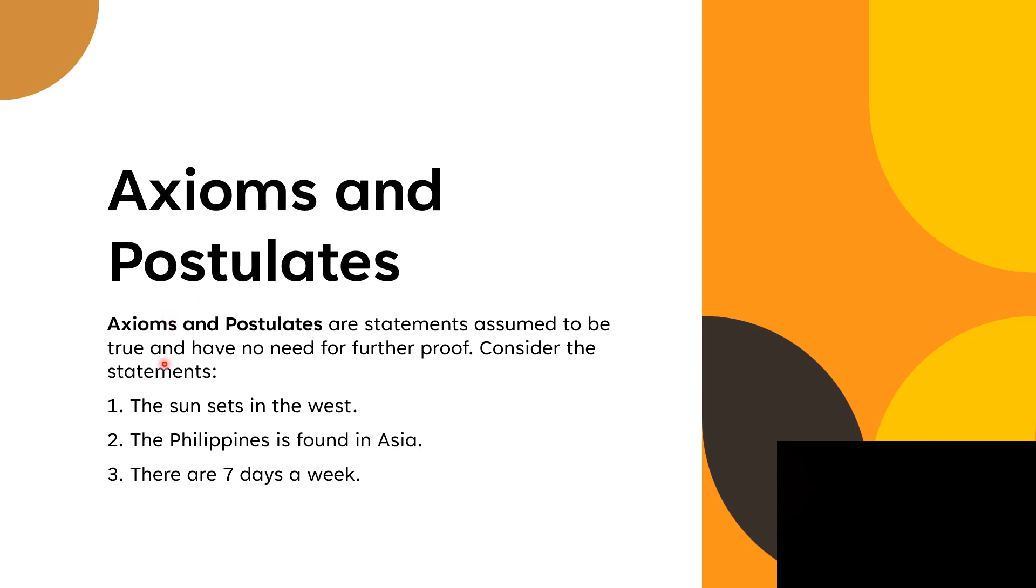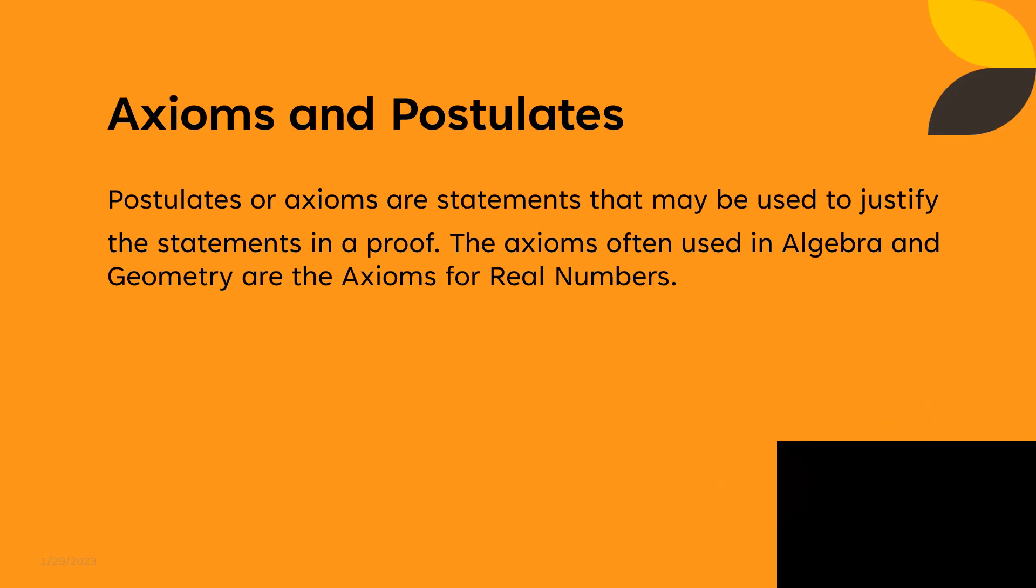Axioms and postulates. Axioms and postulates are statements assumed to be true and have no need for further proof. Consider these statements: the sun sets in the west, the Philippines is found in Asia, and there are seven days of a week. True, okay? These are axioms that do not need further proofing. Postulates or axioms are statements that may be used to justify the statements in a proof. The axioms often used in algebra and geometry are the axioms of real numbers. It is important that we need to familiarize all the axioms or the properties of real numbers because we're going to use that in a proof later.